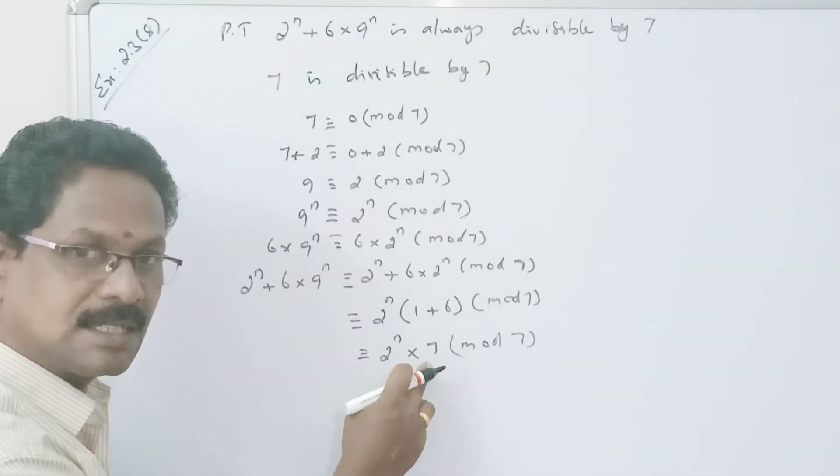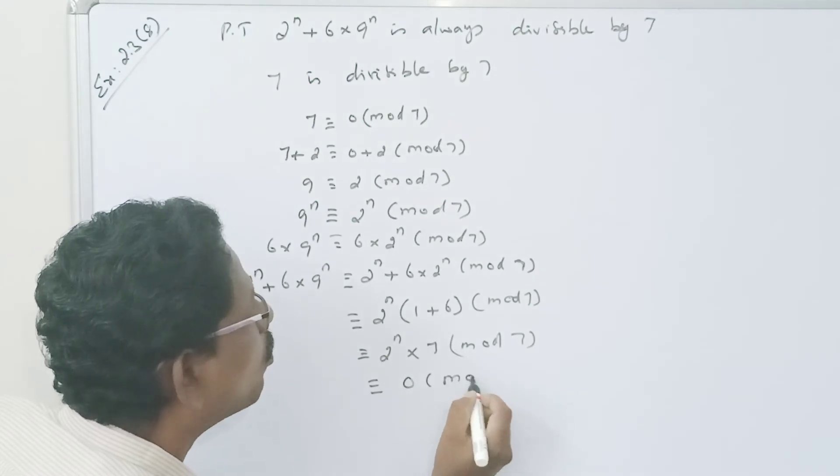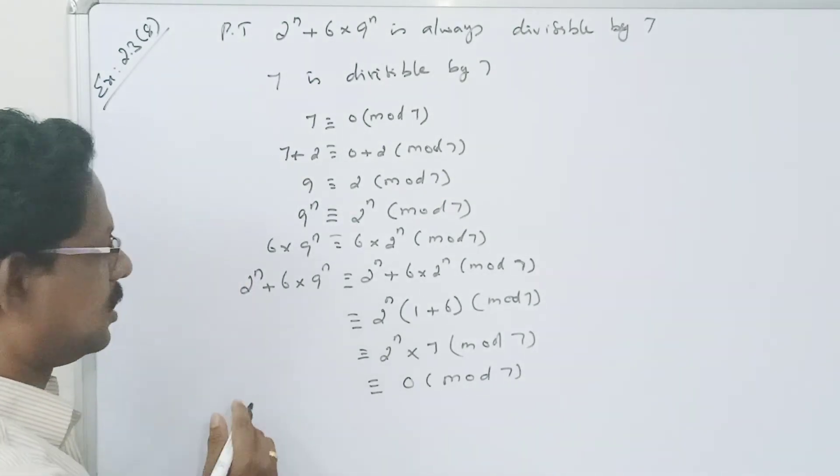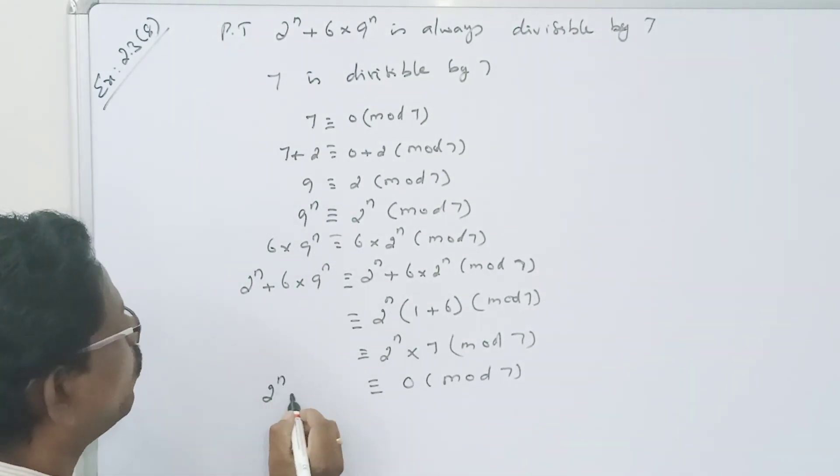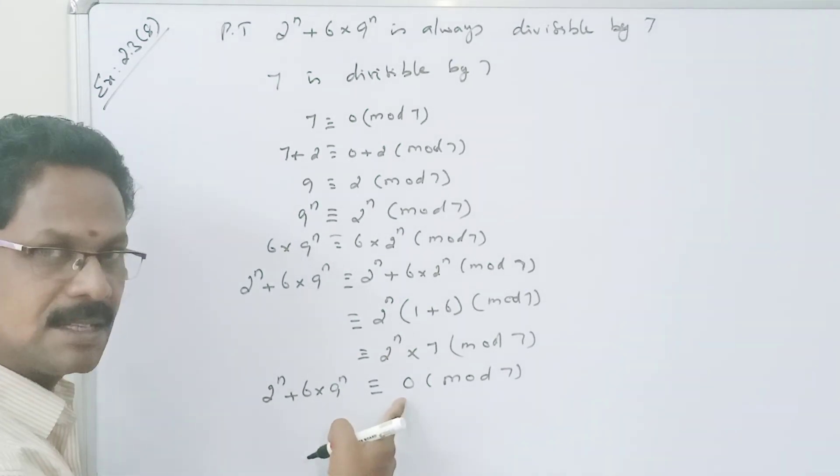7 mod 7 means remainder is 0. So it is congruent to 0 mod 7. What is equal to 2 power n plus 6 into 9 power n. The remainder is 0.